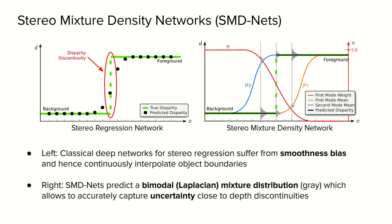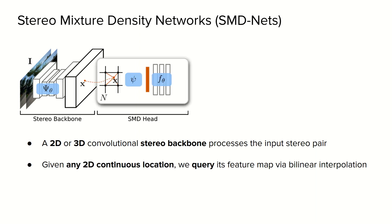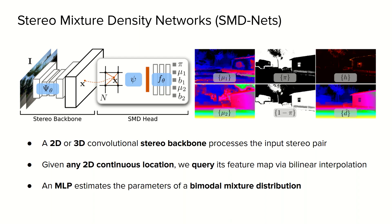By doing so, the distribution can model both the modes, mu1 and mu2, and then we can select as the final disparity value the mode with the highest probability density, such that we can model a sharp edge even if the two modes are continuously transitioning from the foreground to the background. Our model, on top of a standard stereo backbone, does not directly predict the output disparity but instead, by means of an additional head called SMD head, queries at arbitrary continuous locations in the image domain the feature value predicted by the stereo backbone using bilinear interpolation. These features are then passed through a multilayer perceptron in order to estimate the parameters of the bimodal Laplacian mixture distribution.